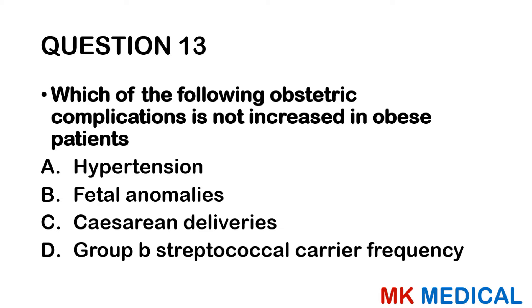Question 15: Fetal movements are typically felt for the first time at approximately what gestational age? A — 8 weeks. B — 14 weeks. C — 16 weeks. D — 18 weeks. This process of perceiving fetal movements for the first time is known as quickening, and it happens roughly at around 16 weeks. The answer is C.